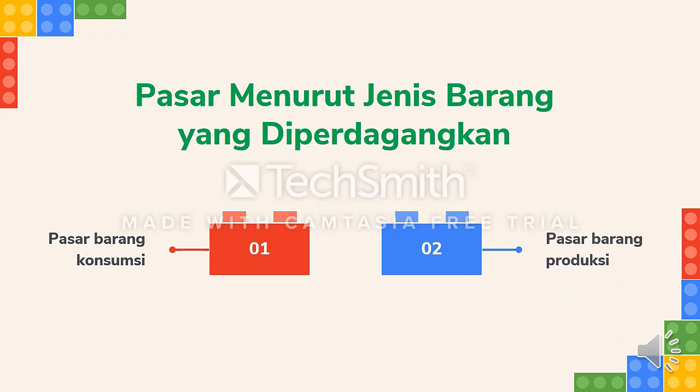Kedua adalah pasar barang produksi, yaitu pasar yang menyediakan keperluan faktor-faktor produksi. Contoh pasar produksi antara lain pasar tenaga kerja yang merupakan tempat tenaga kerja mencari lapangan pekerjaan, dan pasar modal.